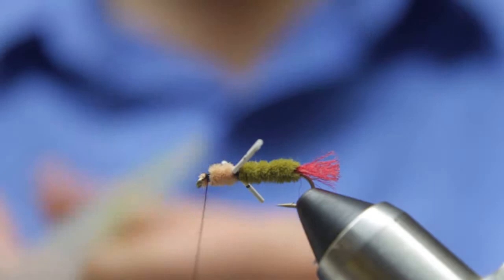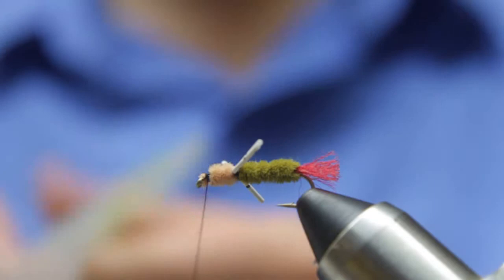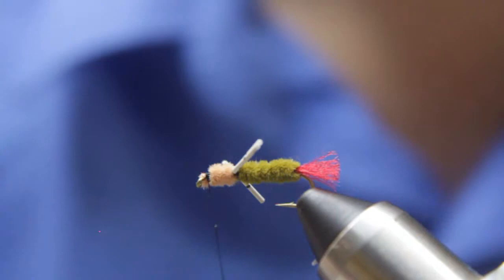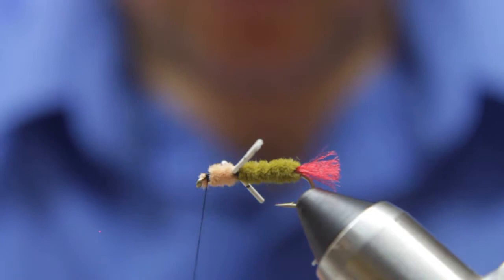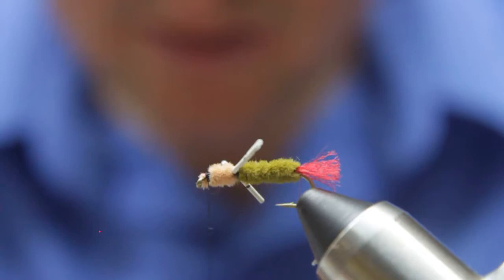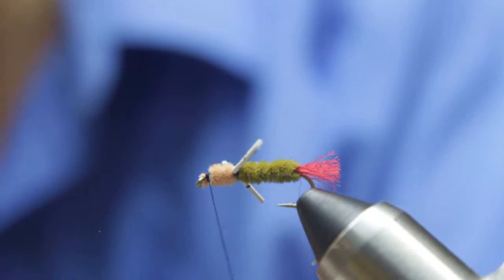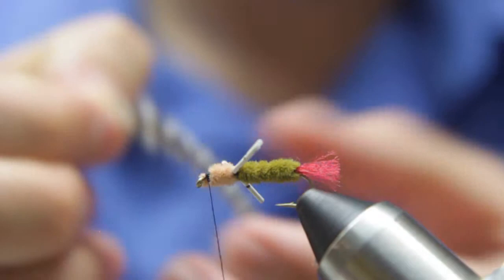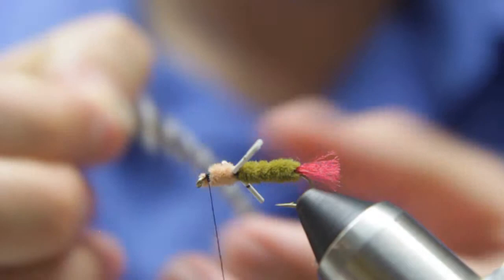Then we're going to grab a hackle fiber. And we're going to take our hackle gauge and measure. Since this is a size 12 hook, I probably want to go about 8 or 10 for the size of the hackle. That's a good one right there. And now we're going to tie it in. It doesn't have to be a good piece of hackle. It just has to be a piece of hackle.